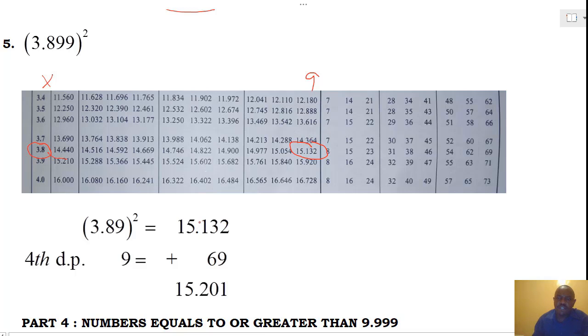Then there is a fourth digit, and the fourth digit is a 9. So we have 1, 2, all the way to 9. And this 9 corresponds to 69. Now, how do we add these 2? As we had earlier assigned, we let 2 correspond to 9, and 3 corresponds to 6. And we had to get 15.201.